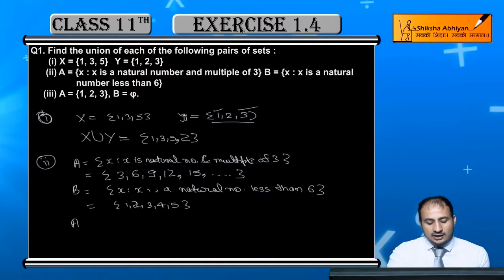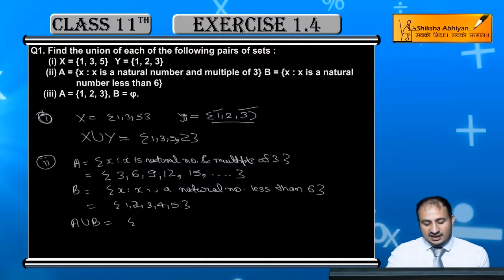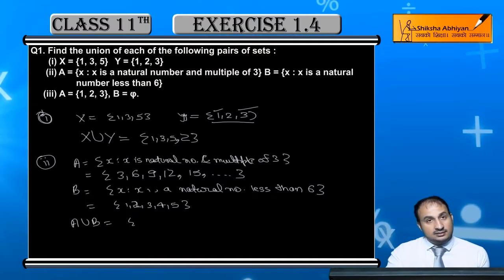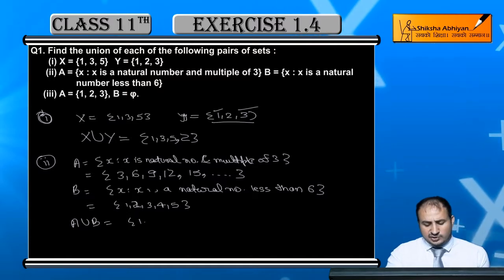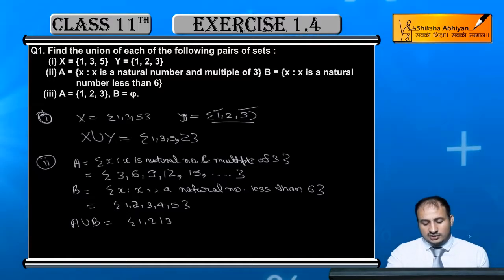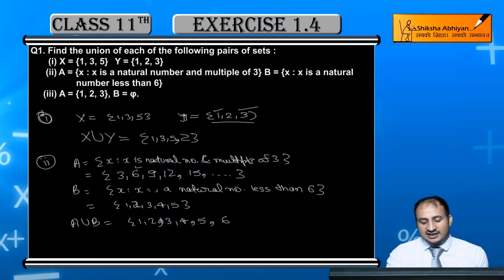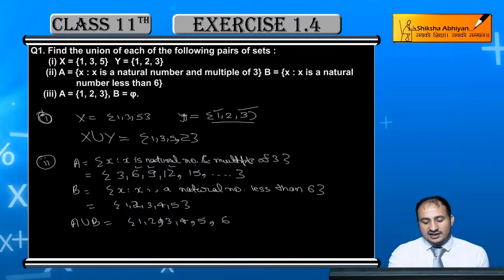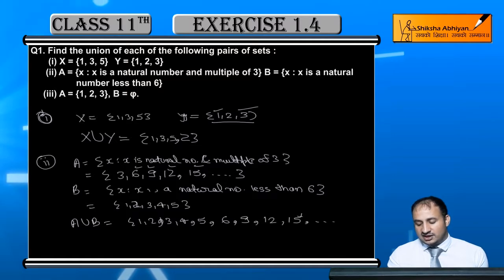Now we find A union B. Taking all elements of A and B together: A union B = {1, 2, 3, 4, 5, 6, 9, 12, 15, ...} — note that 3 is already in B, so it is not repeated, and then the multiples of 3 continue onwards.